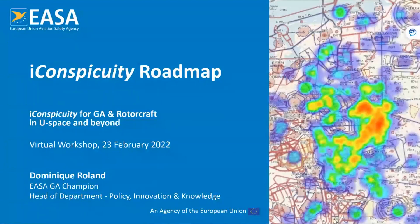Good morning to all. My name is Dominique Rolland. I am the champion for the GR roadmap project at EASA. I am also head of department for policy, innovation and knowledge. And I will guide you through the Iconspicuity roadmap.